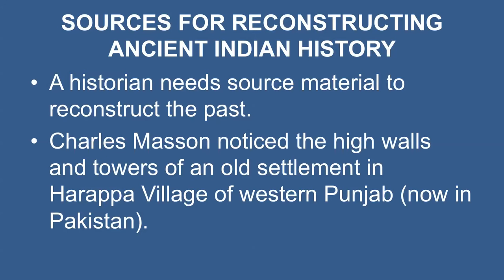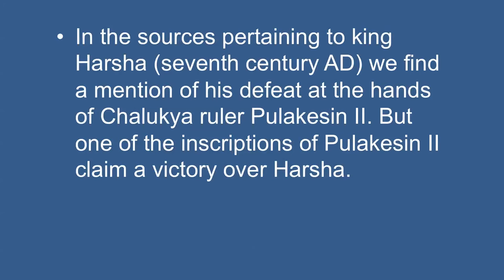For example, in 1826, Charles Mason noticed the high walls and towers of an old settlement in Harappa village of western Punjab, now in Pakistan. Five decades later, Sir Alexander Cunningham collected some seals from this site, but it took archaeologist John Marshall another 50 years to identify the oldest civilization in the Indus region. Regarding King Harsh in the 7th century AD, we find mention of his defeat at the hands of Chalukya ruler Pulkishan II, but one of the inscriptions of Pulkishan II claims a victory over Harsh. It is obvious that Harsh's biographer Banabhat, who wrote Harsh's Charita, deliberately did not mention the defeat of his patron, as he received patronage from King Harsh.